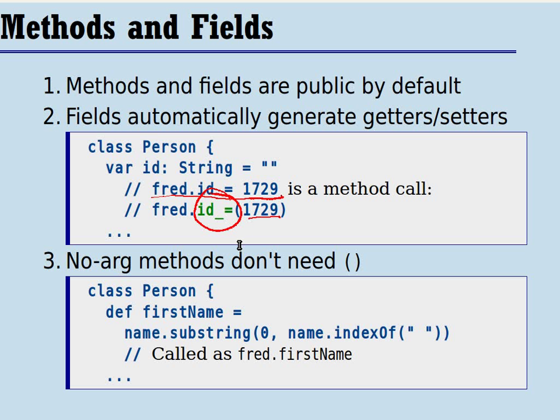Now the third difference is that you can define methods in Scala that don't take parentheses. So over here, let's look at this method here, the firstName method. Notice that there are no parentheses here. And that means when you call that method, such as in the call over here, you also supply no parentheses in the call.